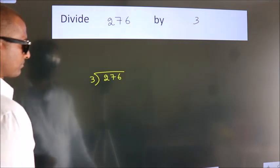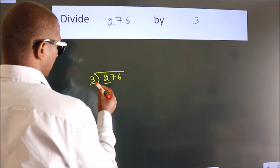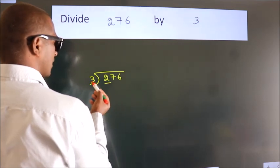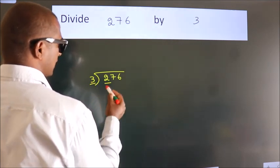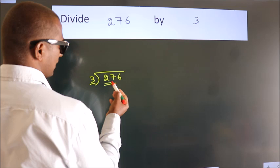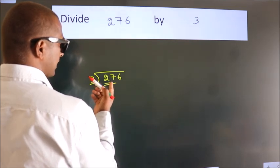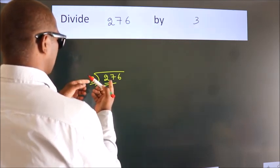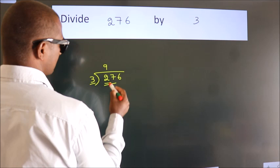Next, here we have 2, here 3. 2 is smaller than 3, so we should take 2 numbers: 27. When do we get 27? In the 3 table. 3 times 9 is 27.